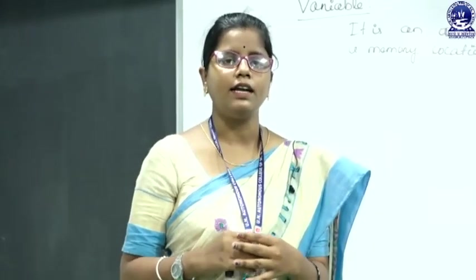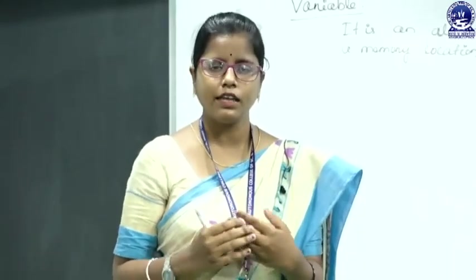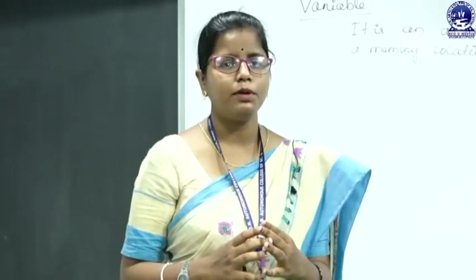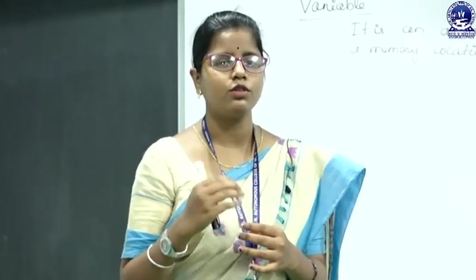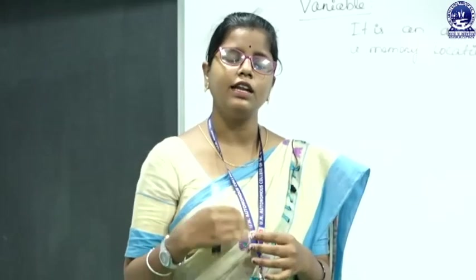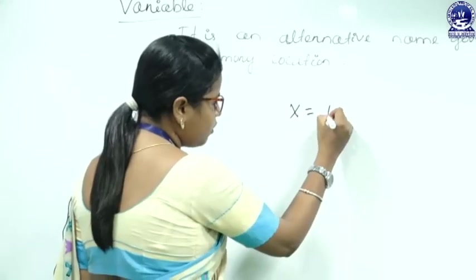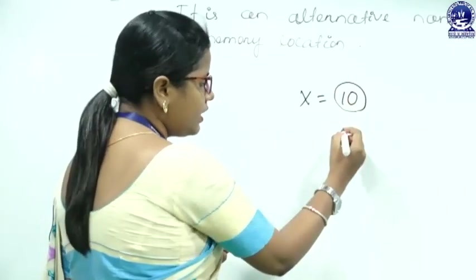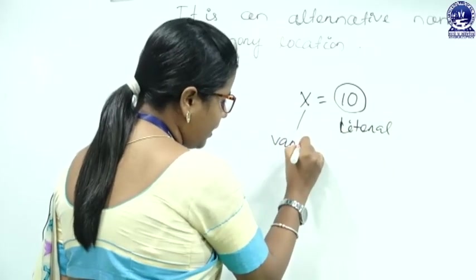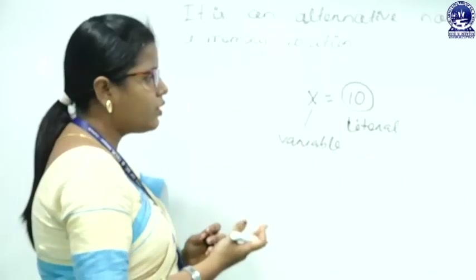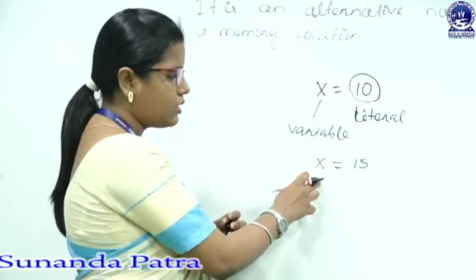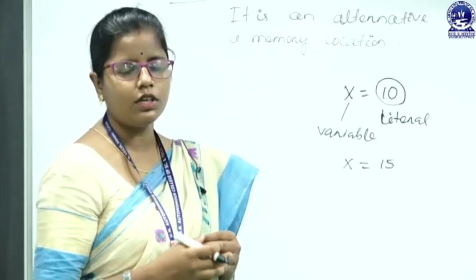The name 'variable' itself indicates that the value stored in it will vary — it is not a constant. We can assign a value to a specified variable, then later reassign any other value to that same variable. So a variable is simply a name for a memory location where we store values, retrieve them, and change them. For example, x equals to 10 means x is a variable containing 10. Here 10 is a literal and x is the variable. We can then change it by writing x equals to 15, assigning 15 to variable x. The value of a variable can vary according to the user or programmer.